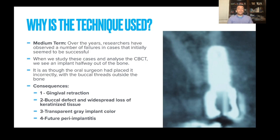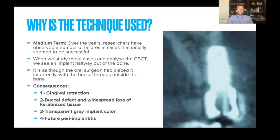It has become very clear that the blood supply to the periodontium is more important than the blood supply provided by the periosteum. In the medium term, researchers have shown failures in cases that initially seemed quite successful. On CBCT scans, an implant can be halfway out of the bone and functioning without issue. Was the implant placed incorrectly, or was it placed correctly and something changed over time? Consequences include gingival retraction, buccal defects, shine-through of the implant through tissue, and a cascade of peri-implantitis complications.